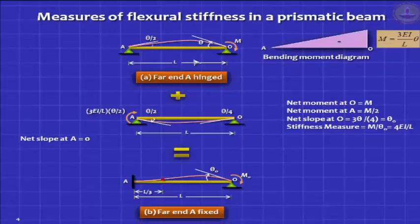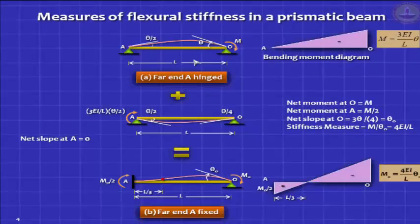That is how we got this picture which we showed you in the last class. We get a bending moment diagram like this. So remember, when the other end is fixed, the stiffness measure is 4EI by L, and you get a carry over moment with the same clockwise direction which is equal to M by 2.